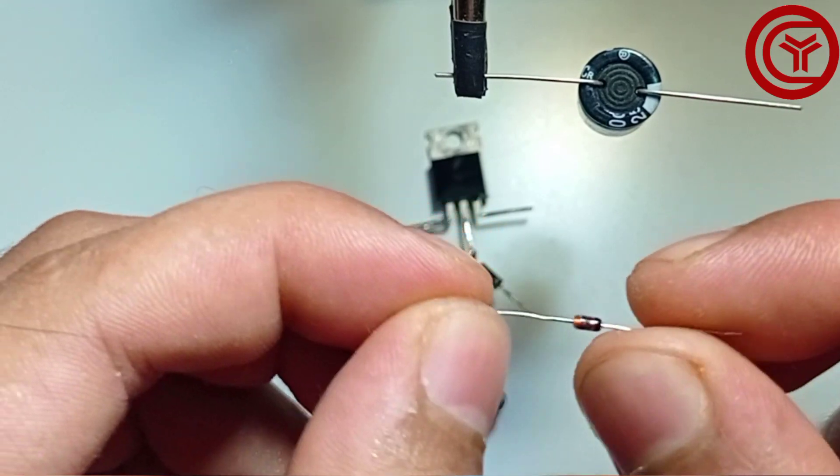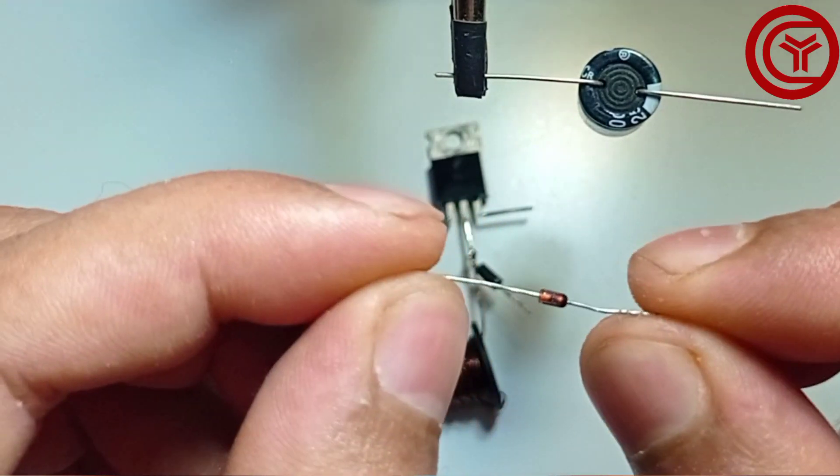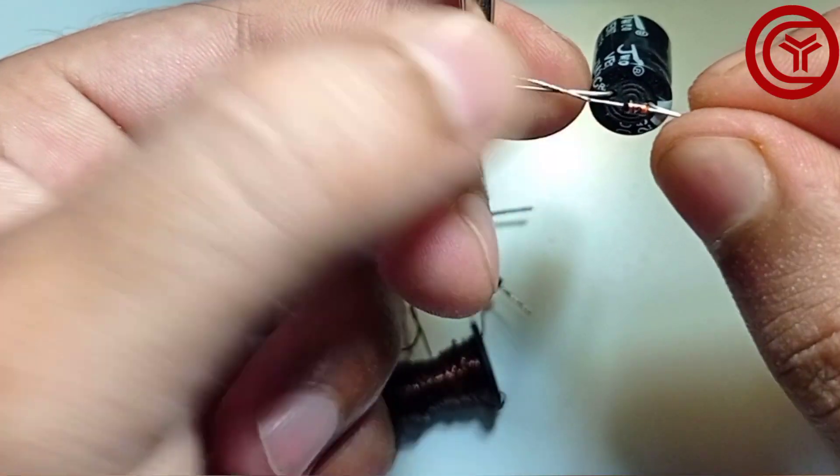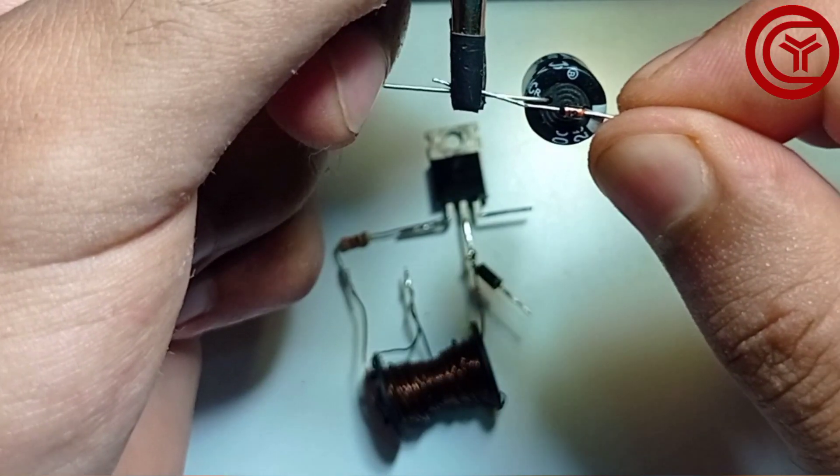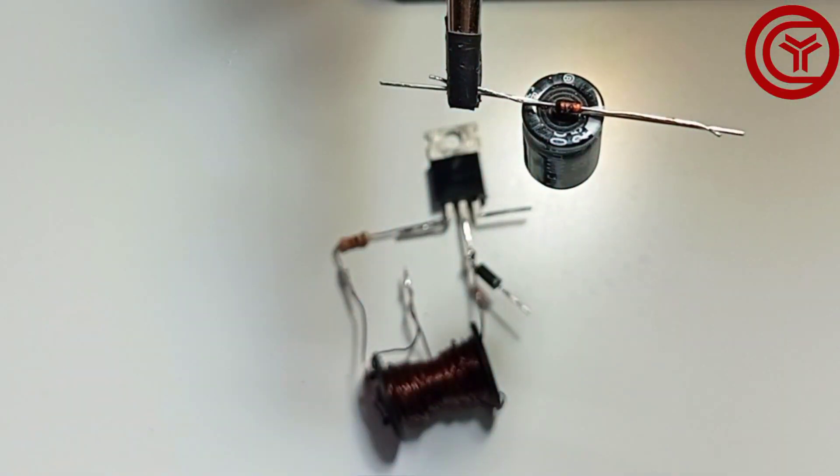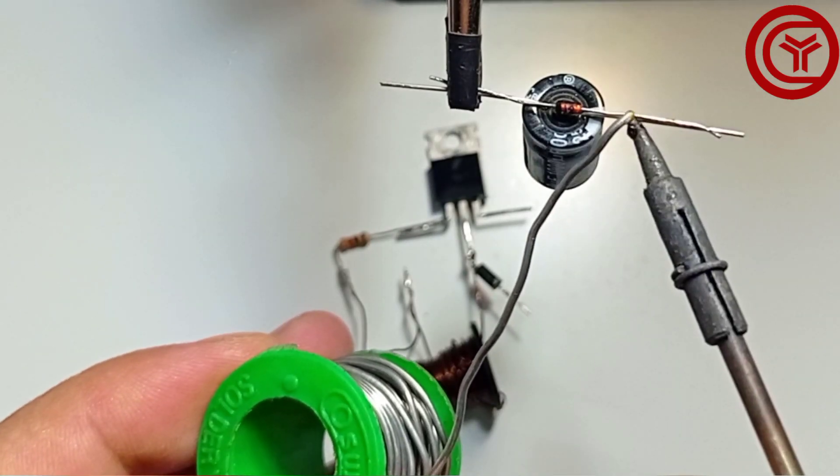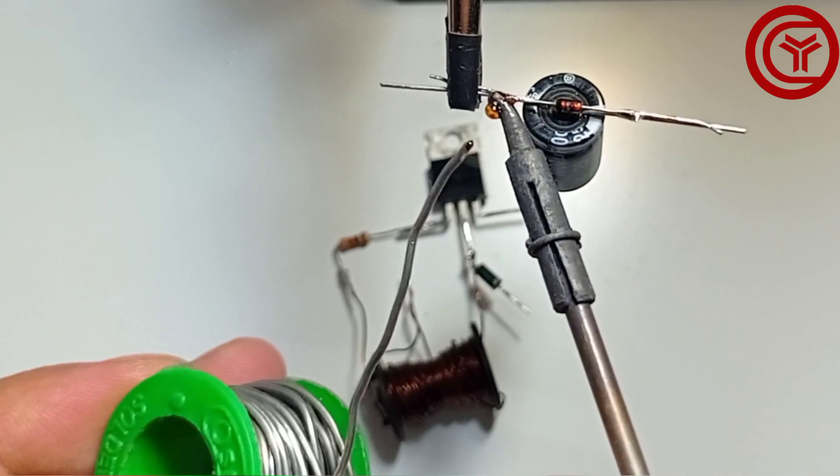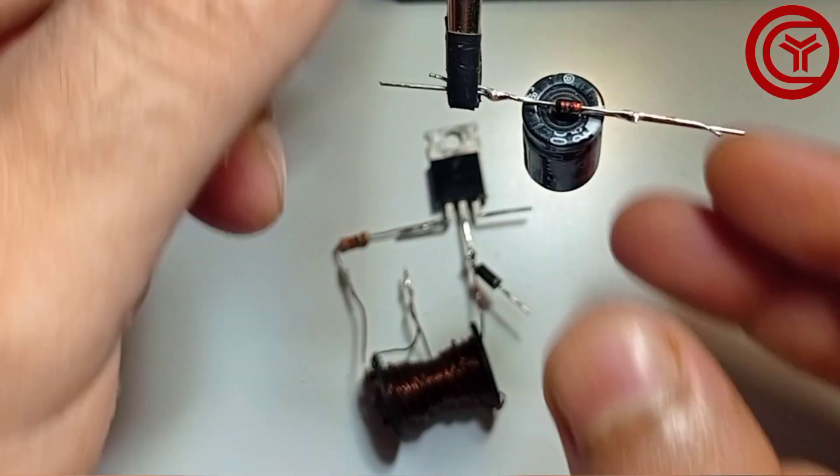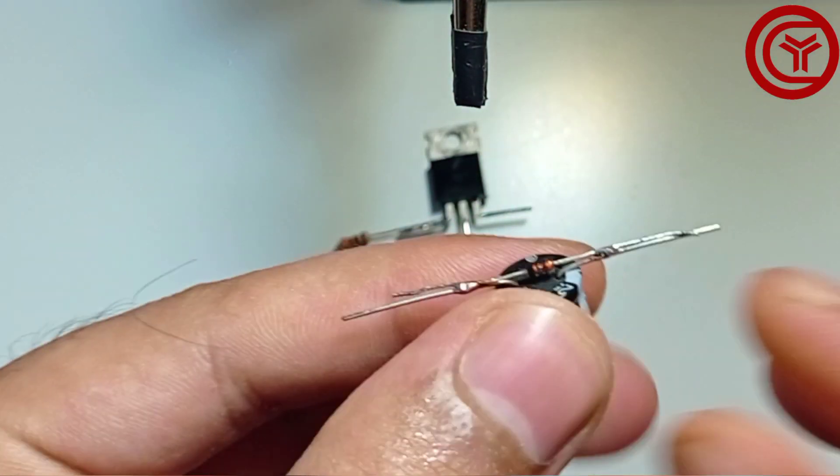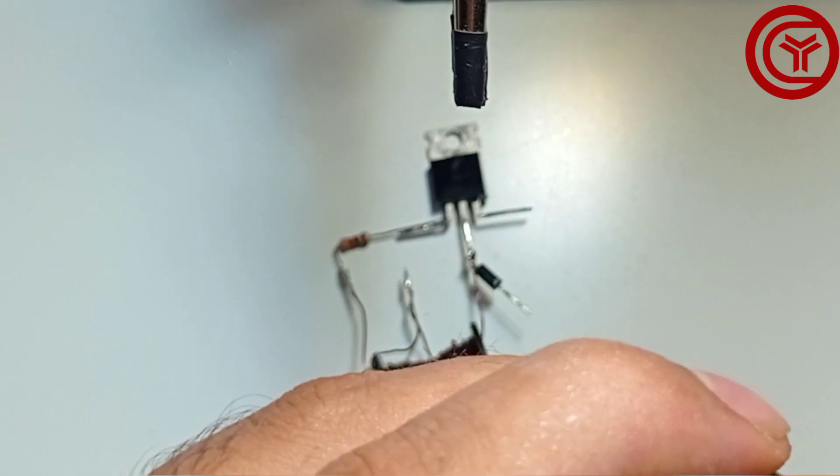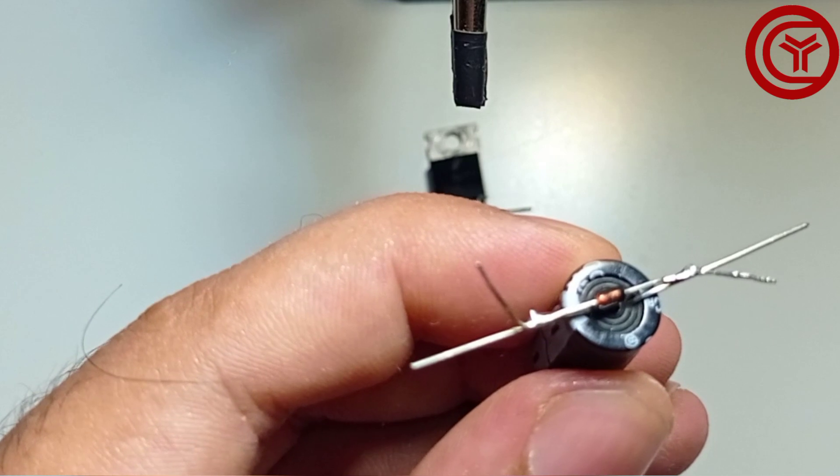Now we have to use 12V Zener diode and solder positive to negative of capacitor, and Zener negative to positive of capacitor. Now let's get started.